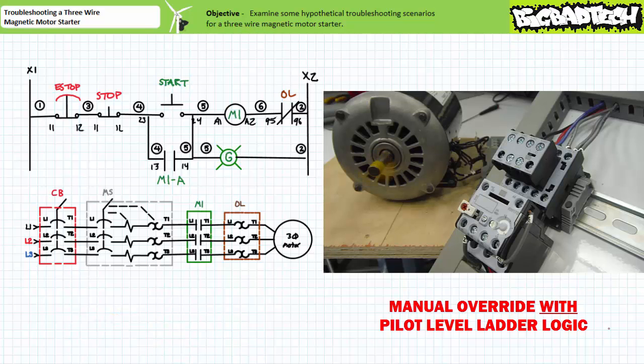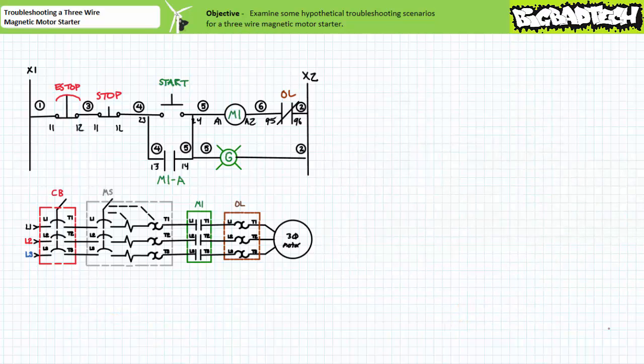Recall that the movement of the contact carrier closes not only the primary L2T contacts, but also the auxiliary pilot level contacts associated with this particular contactor. Notably the M1A holding contact. The holding circuit is established and given pilot level ladder logic is functional, the holding circuit maintains the last asserted state.